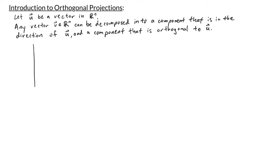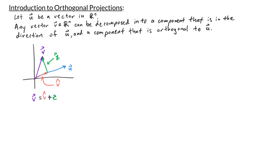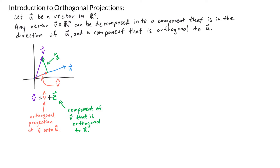Let's draw a picture of this in R2. Say we have a vector u. Then for any other vector v in R2, we can break down v into two components: a part that goes in the direction of u and a part that goes perpendicular to u. We'll call the red vector v-hat and the green vector z, so that v equals the sum of v-hat and z. We call v-hat the projection of v onto u, and z is the component of v that is orthogonal to u.